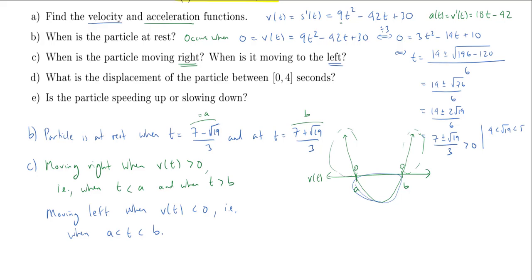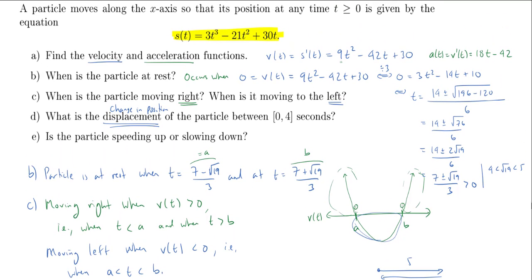How about we try D now. What is the displacement of the particle between 0 and 4 seconds? So the displacement is the total distance that the particle has moved. Not in terms of, let's say I walk over here, and I walk five steps, and then I walk back five steps. In this case, I've walked a total of ten steps. However, because I ended up where I started, my displacement is actually zero. So I want to know the actual change in my position, change in position.